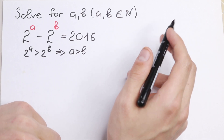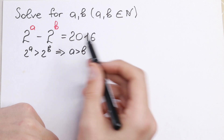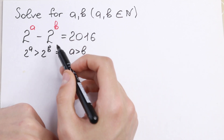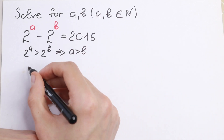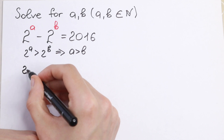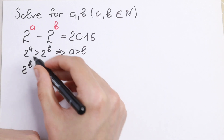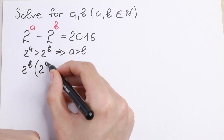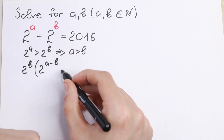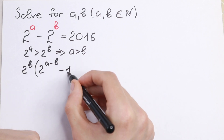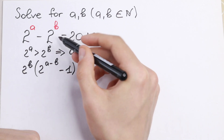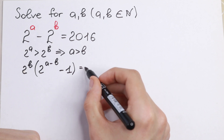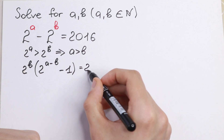What are we going to do next? We need to factor out. Let's factor out 2 to the power B. So we get 2 to the power B, in parentheses, times 2 to the power (A minus B) minus 1, equal to 2016.